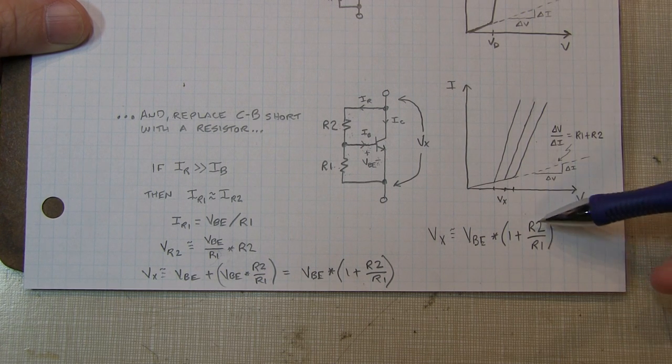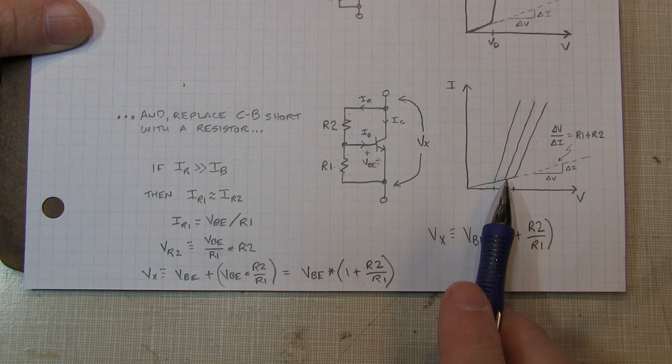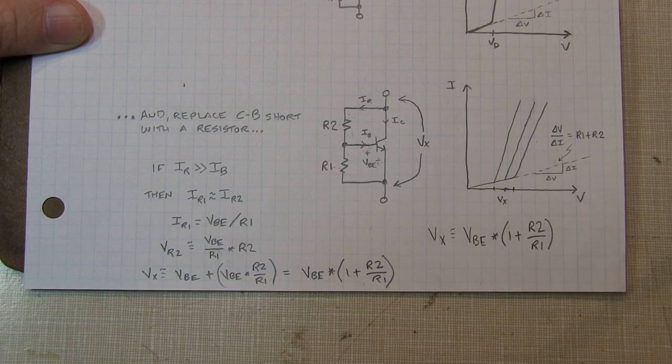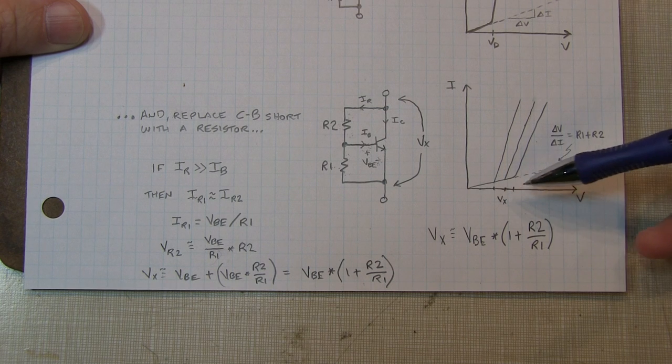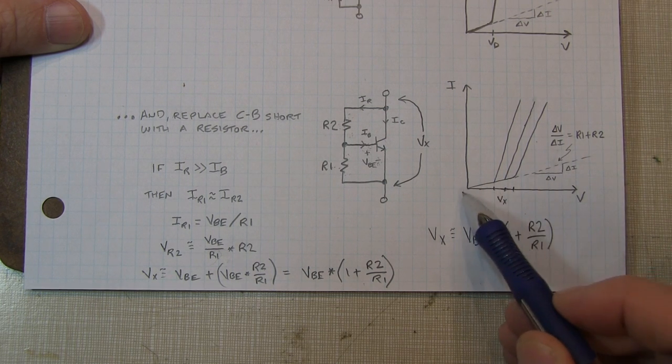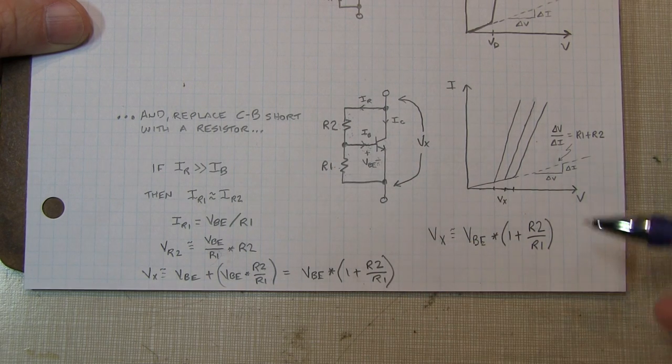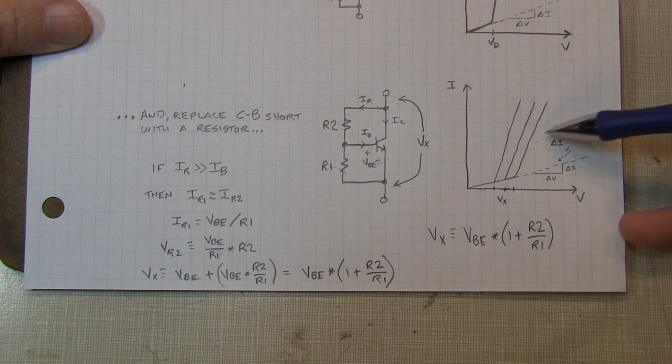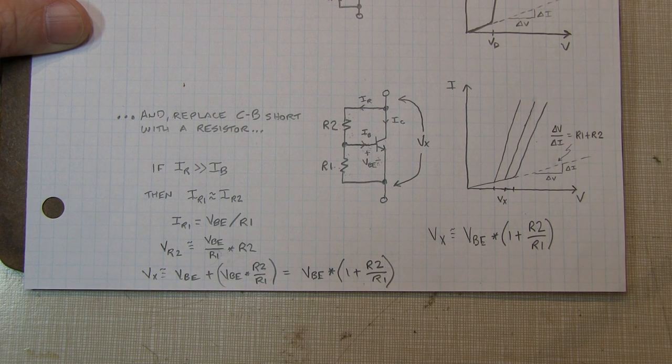And by varying that ratio, we can essentially change where that corner is where the diode turns on. And typically, we're not going to concern ourselves too much with the slope of this baseline here, which is just a function of those resistors, because we're typically going to be operating up in the region up here, where it's acting more like a low-impedance diode. So let's go take a look at this on the scope.